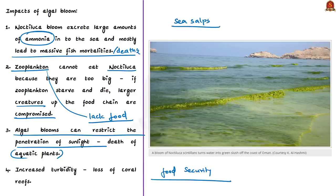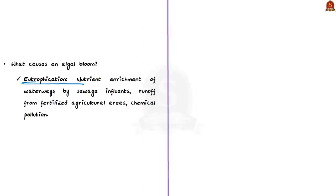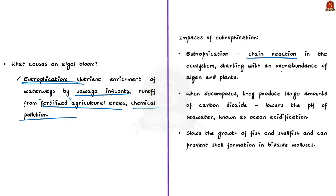There is also increased turbidity — decreased transparency — associated with algal blooms, causing loss of coral reefs as it limits sunlight. The main cause behind algal blooms is widely believed to be eutrophication, which refers to nutrient enrichment of waterways by sewage effluence, runoff from fertilized agricultural areas, and chemical pollution. Algae feeding on these nutrients results in blooms. Eutrophication starts a chain reaction in the ecosystem, beginning with overabundance of algae and plants. This excess matter eventually decomposes, producing large amounts of carbon dioxide, lowering the pH of seawater — a process known as ocean acidification.